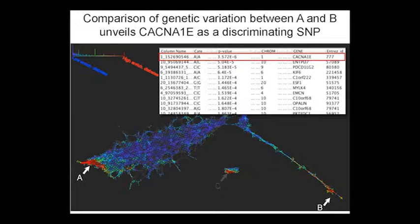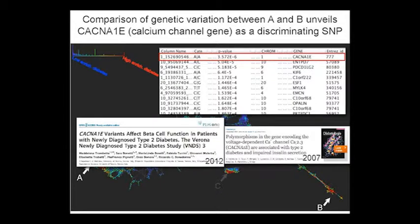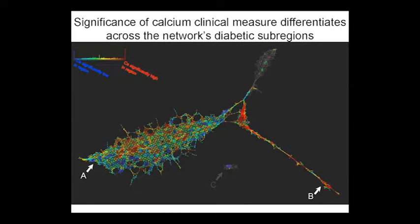For group A and group B, we get a nice hit near a calcium channel gene — a SNP that's been previously implicated in type 2 diabetes. That's a validation hit. Since it relates to calcium function and its association with type 2 diabetes, we can search the EMR for calcium-related traits and re-project onto the map. We see one group is significantly high in calcium versus the other, stratifying the patients based on a biologically meaningful principle that may indicate responsiveness to a different therapy.